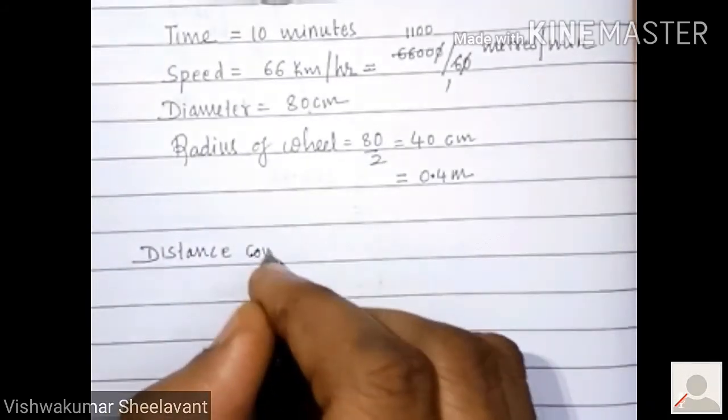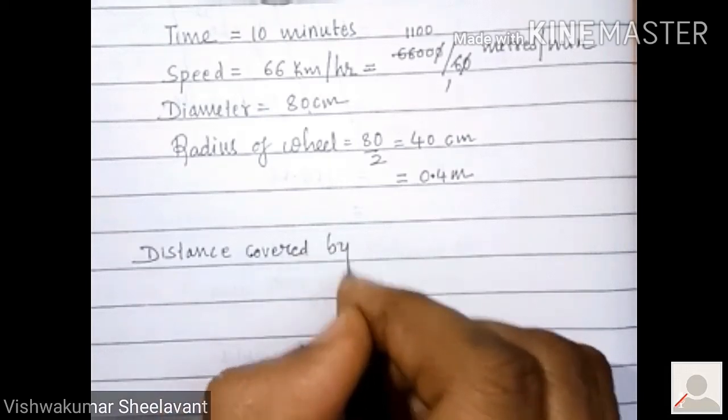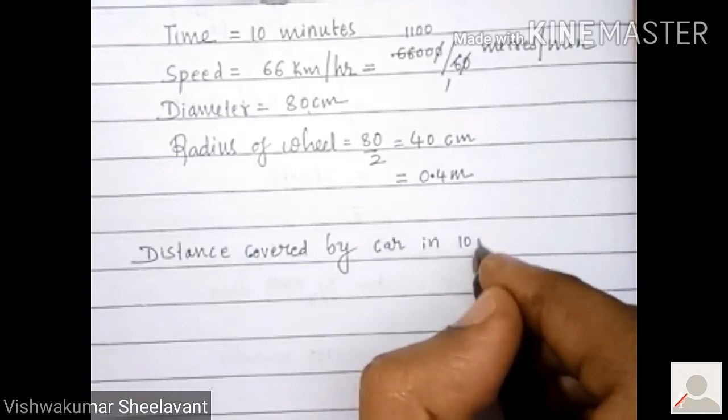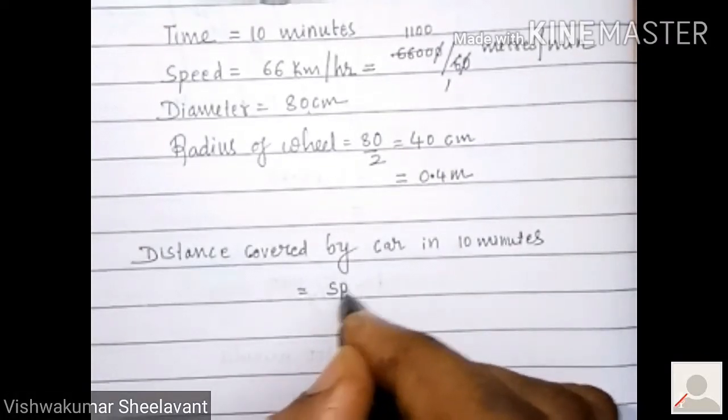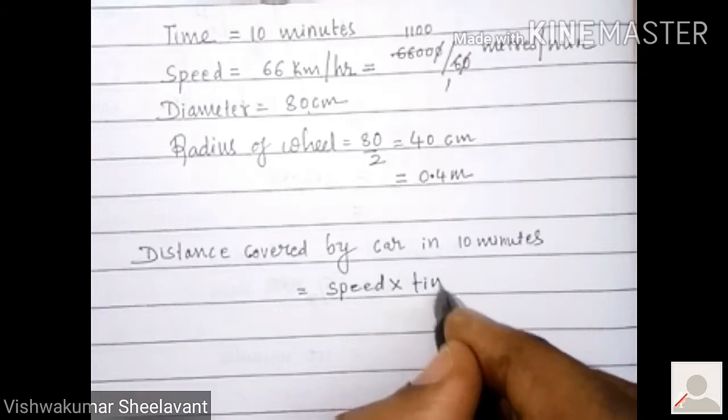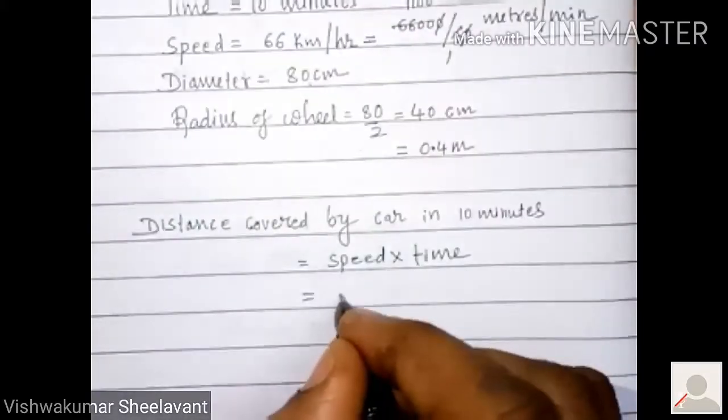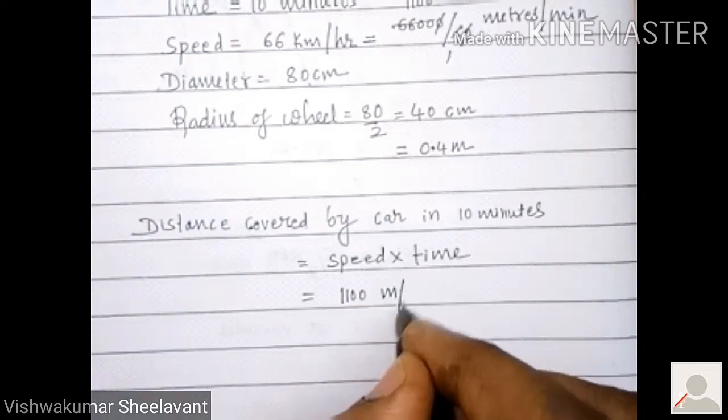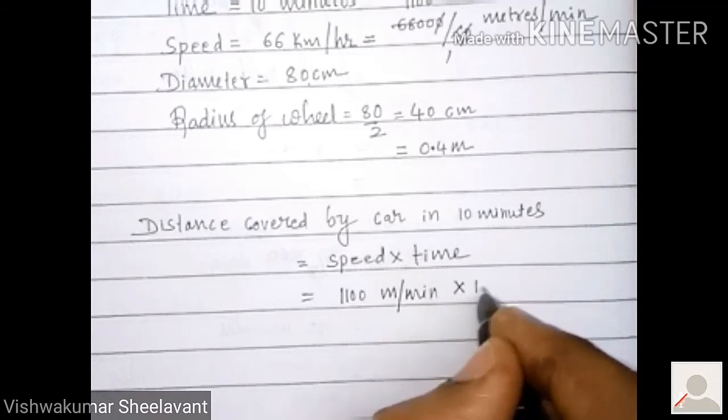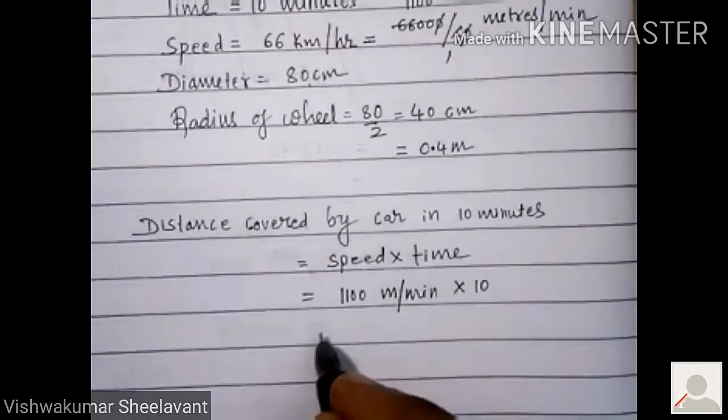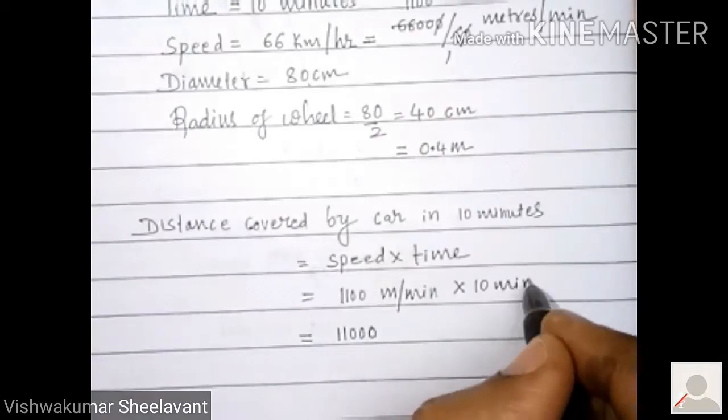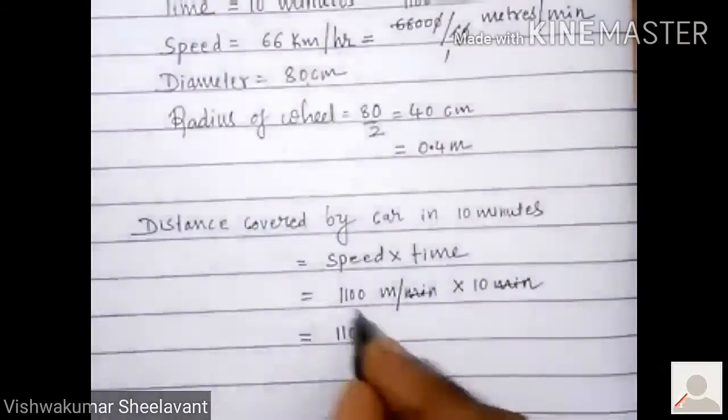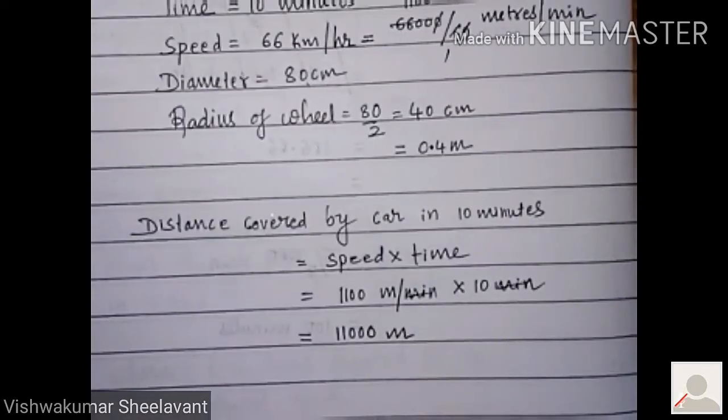Distance covered by car in 10 minutes is equal to speed times time. That is equal to 1,100 meters per minute times 10. Minutes will cancel, and you will have 11,000 meters.